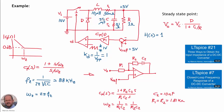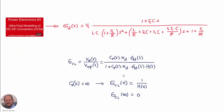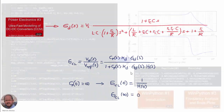We looked at an example using a buck converter operating in closed loop with a PI compensator. The PI compensator is implemented using an operational amplifier. We obtained the full expression of the converter, first in open loop and then in closed loop.